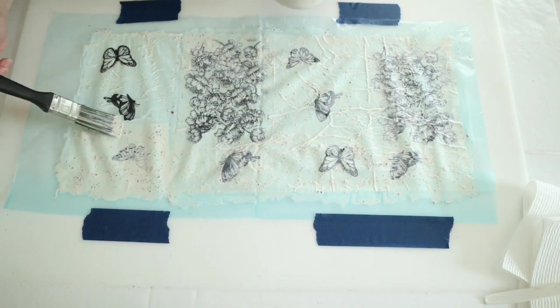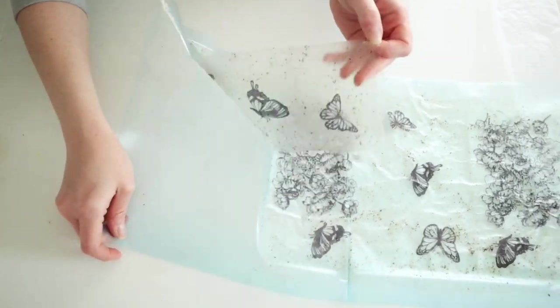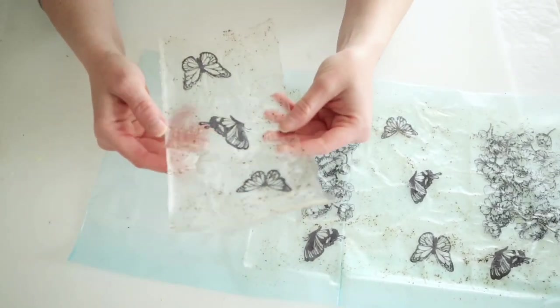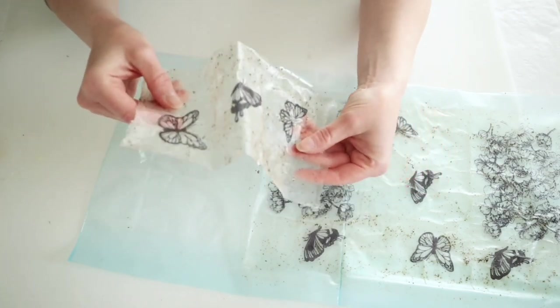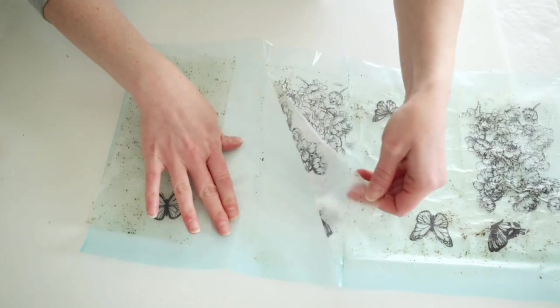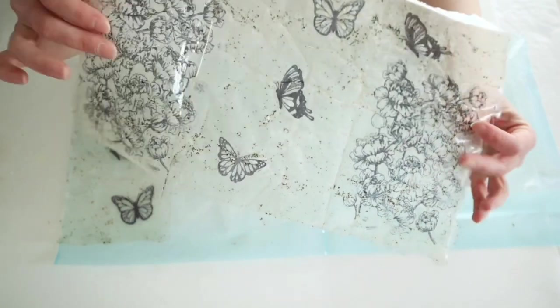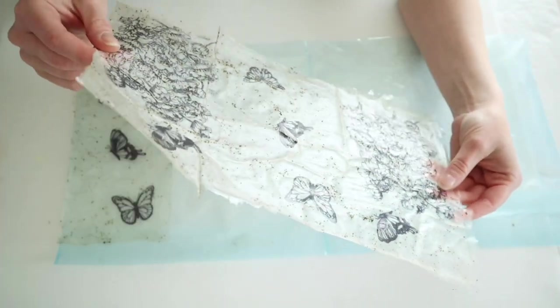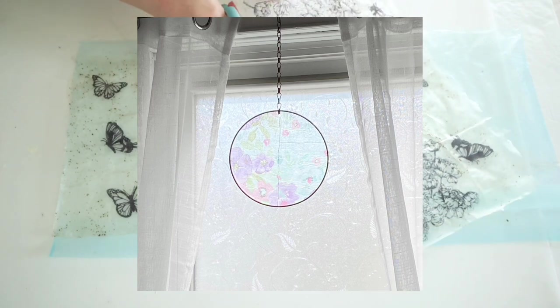The next day, you can just peel this right off of your plastic sheet, and it kind of reminds me of vinyl or plastic when it's off of there. I even did it with the flowery part of the napkin and ended up making a suncatcher with it because it actually reminds me of stained glass.